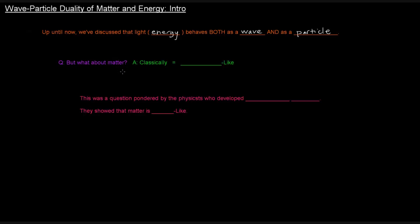But what about matter? Classically, classical physics sort of viewed matter as being particle-like — little particles make up matter. But this was a question that was pondered by the physicists who eventually developed quantum theory, which kind of explains what's going on with atoms. And in developing quantum theory, they showed that matter is wave-like, which is kind of weird. But that's kind of what this series of videos explores.